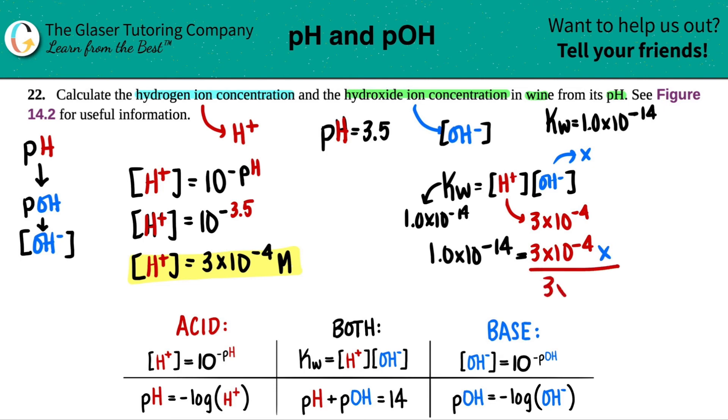Solve for X. We're just going to divide by 3 times 10 to the negative 4th on both sides. This cancels out. And now we have X, which is the OH- concentration, right?